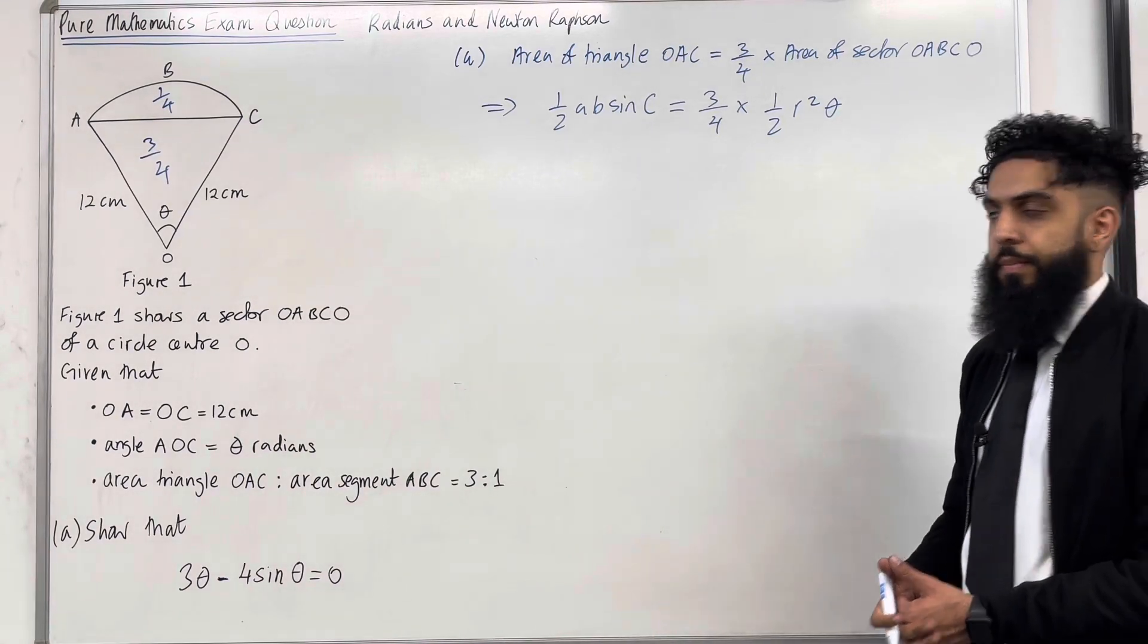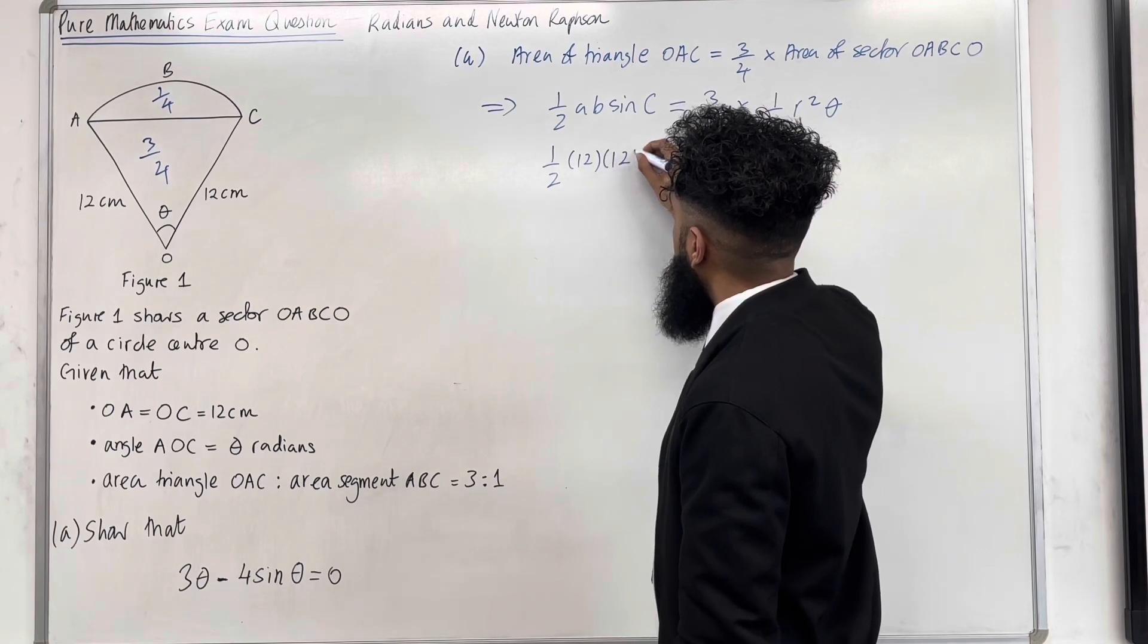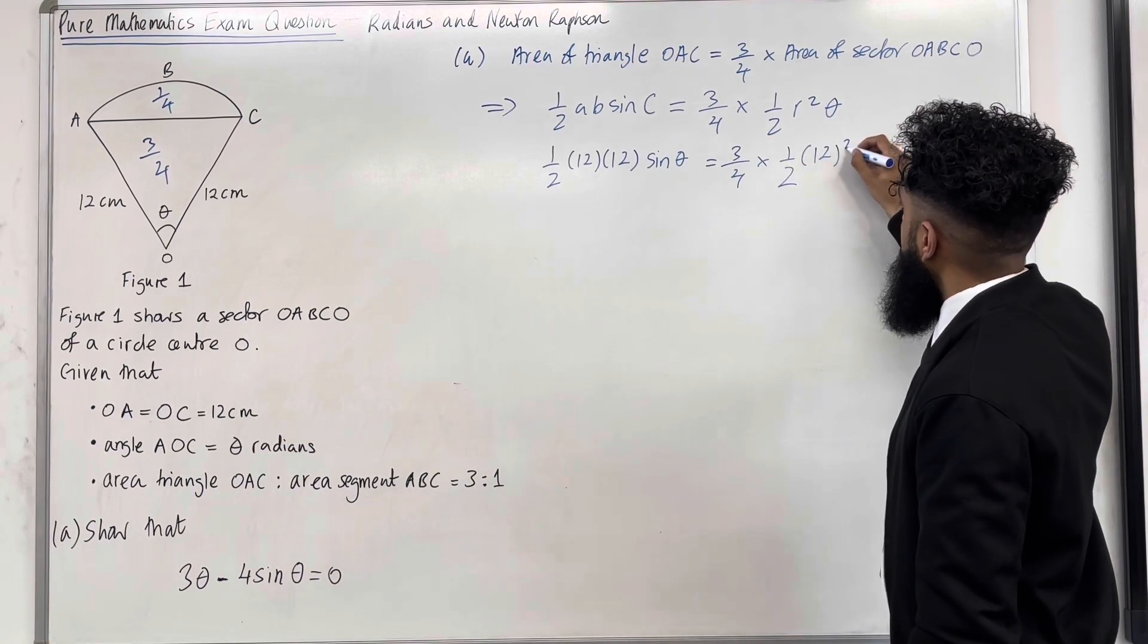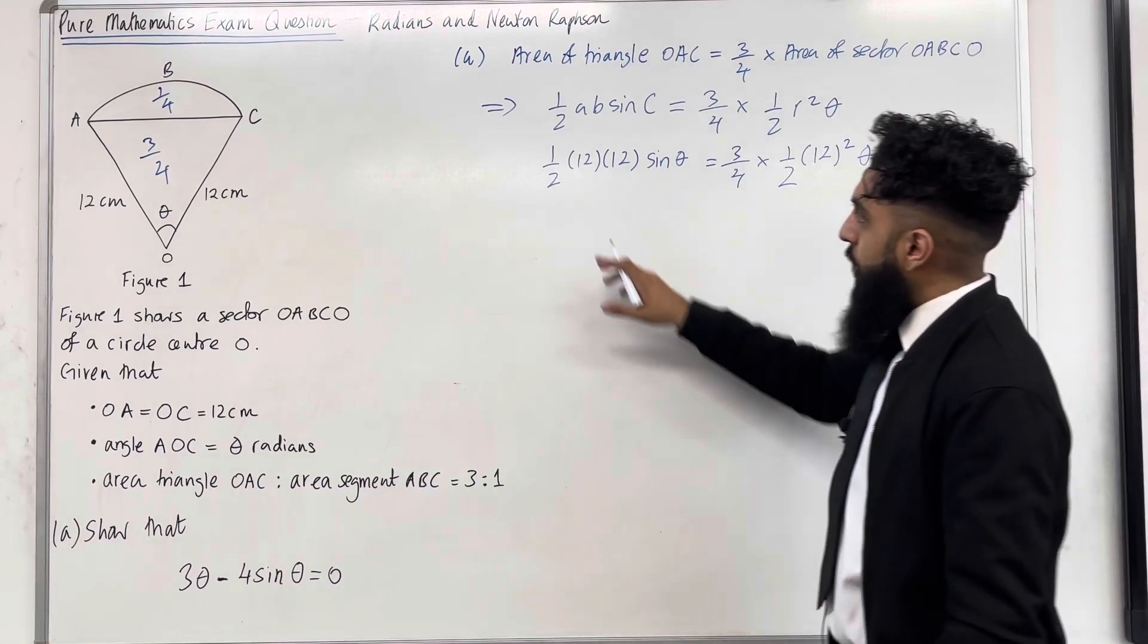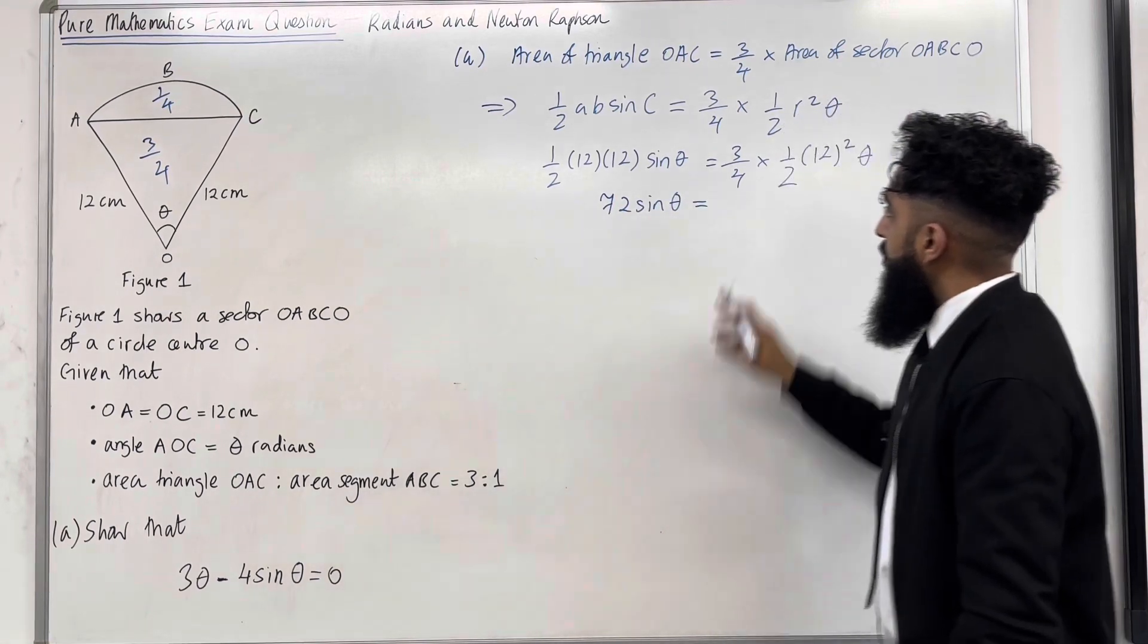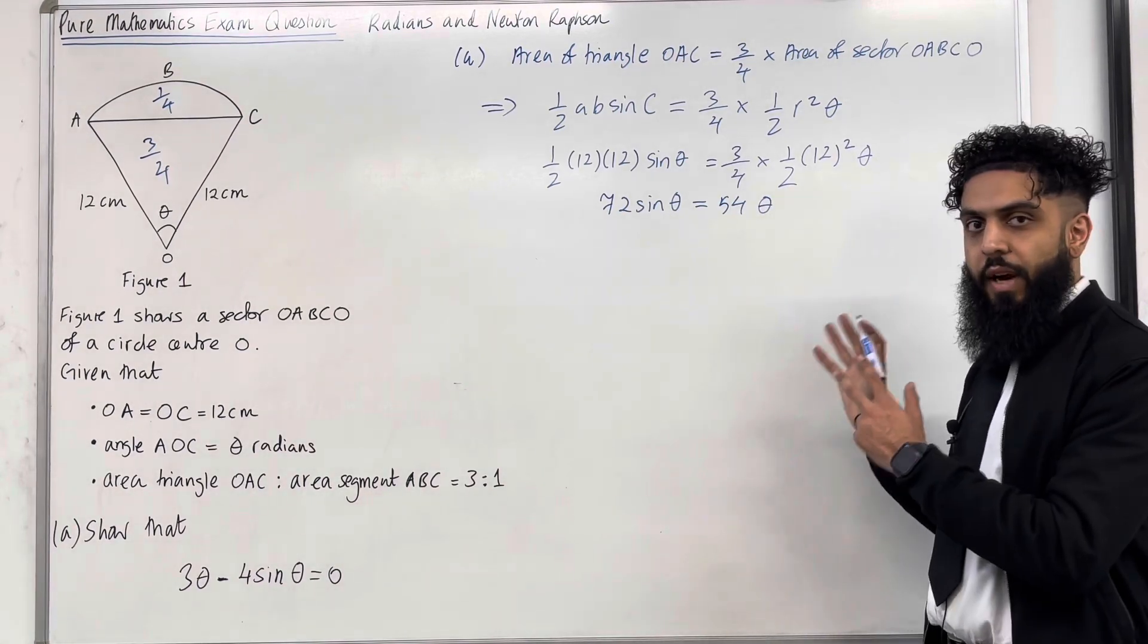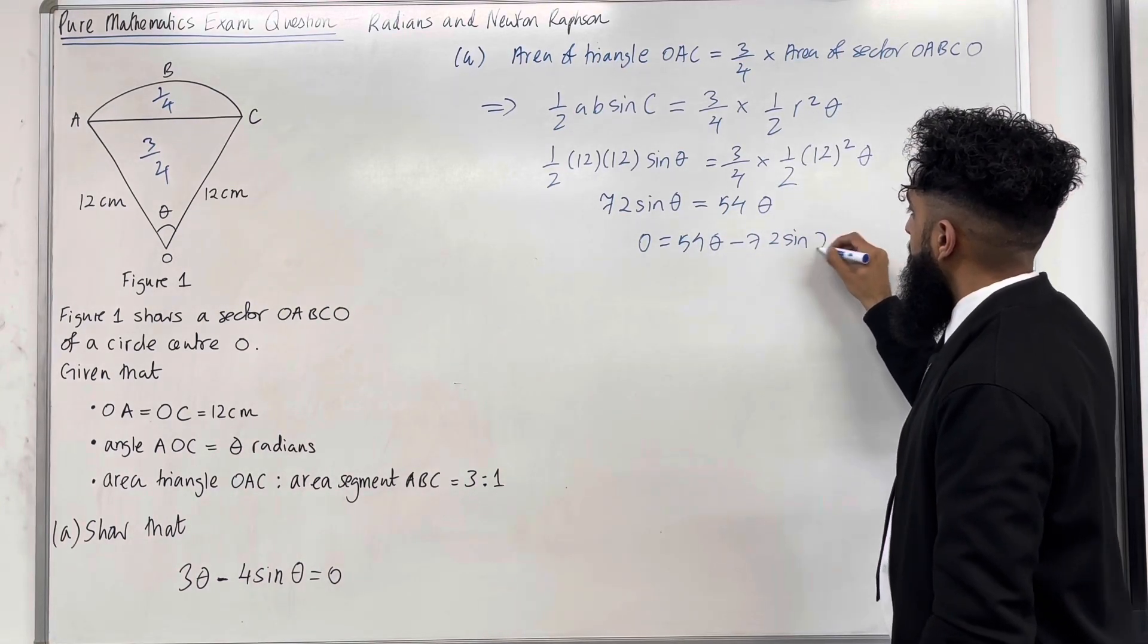Now I can substitute my values in. I get a half multiplied by 12 multiplied by 12 sine theta equals 3 quarters multiplied by a half multiplied by 12 squared theta. I need to simplify this equation. A half times 12 times 12 gives me 72 sine theta equals 3 quarters times a half times 12 squared gives me 54 theta. I can take everything to the right hand side, so 0 equals 54 theta minus 72 sine theta.